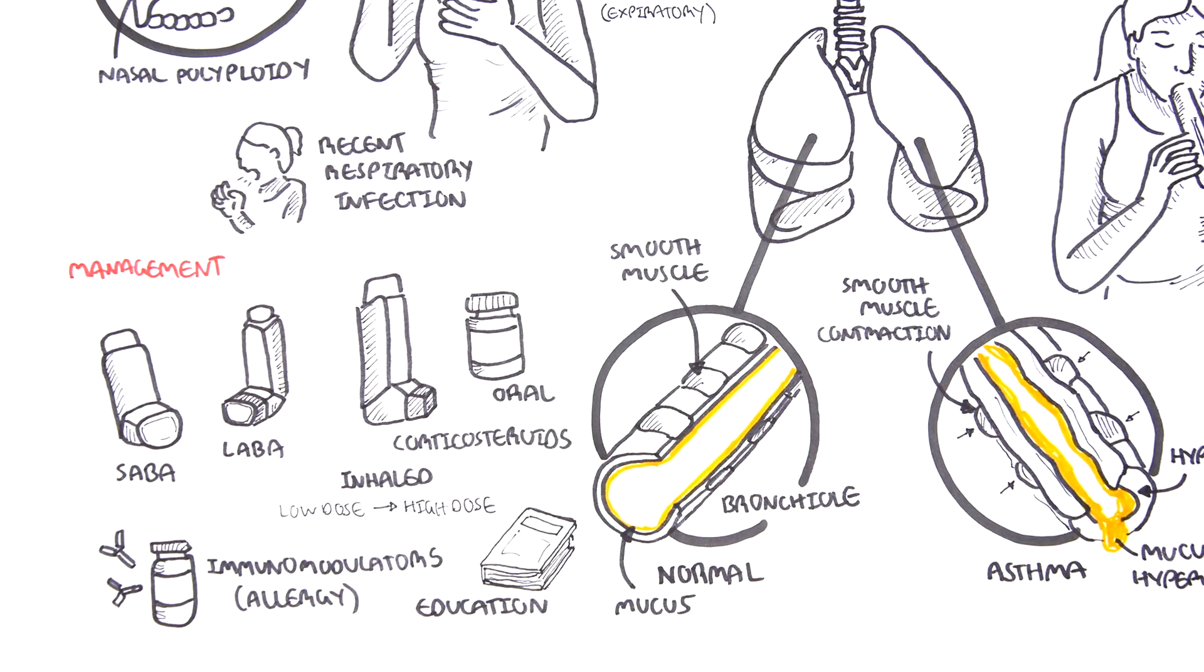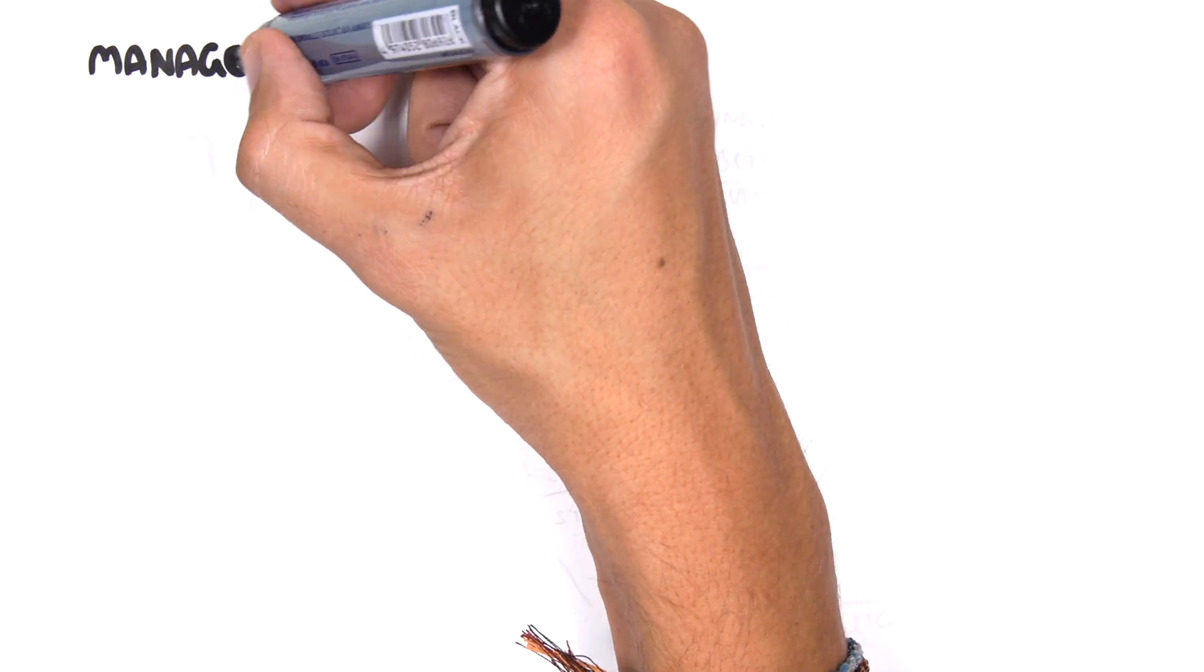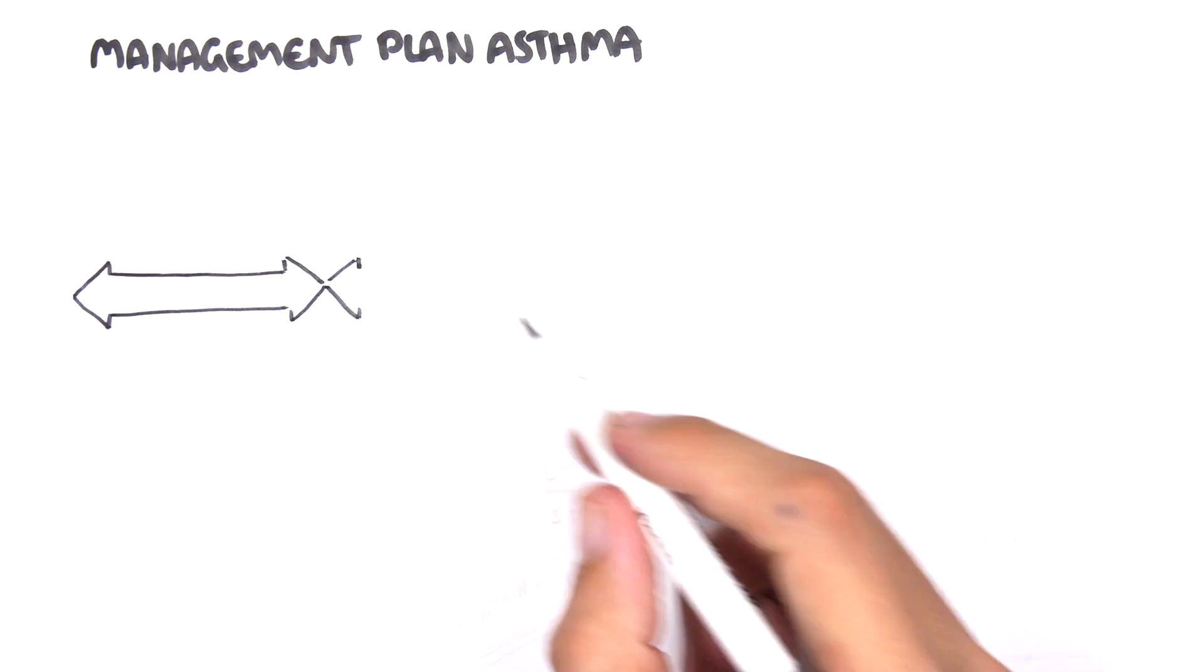Asthma can be mild, moderate, or severe. Depending on the severity, different management options can be implemented. One way is to develop a management plan for asthma – the STEP approach.